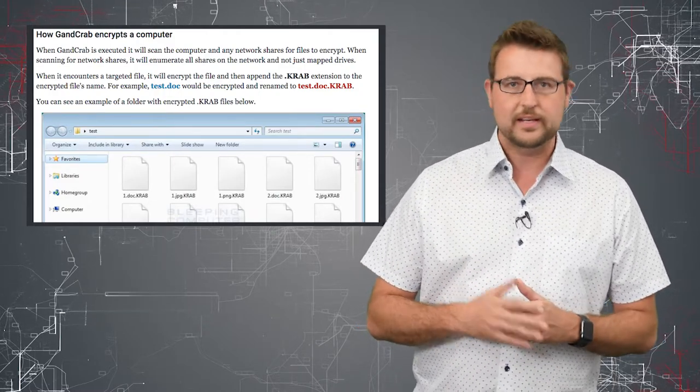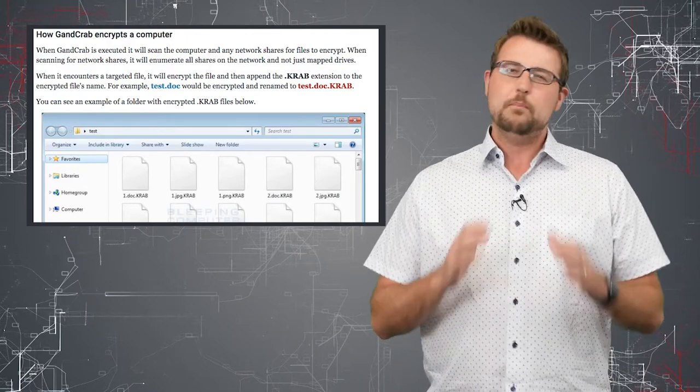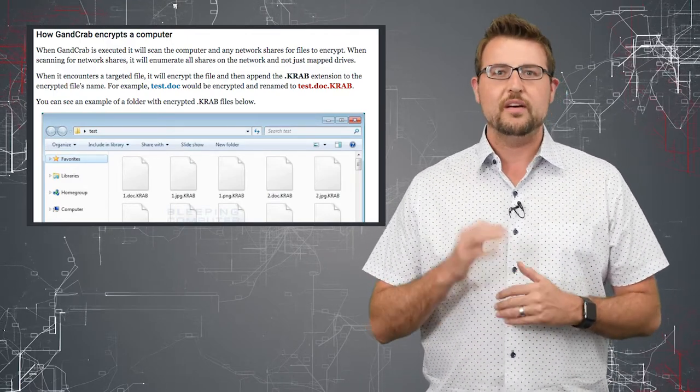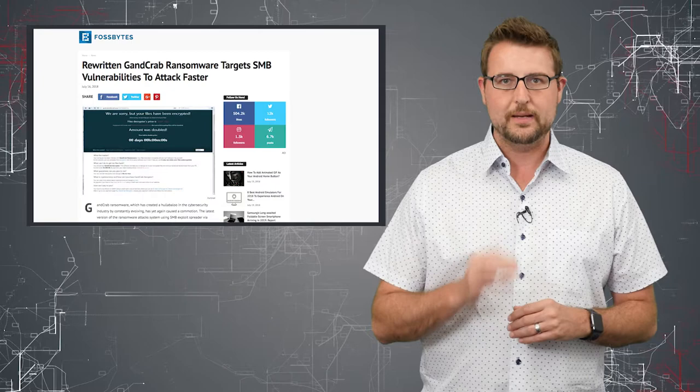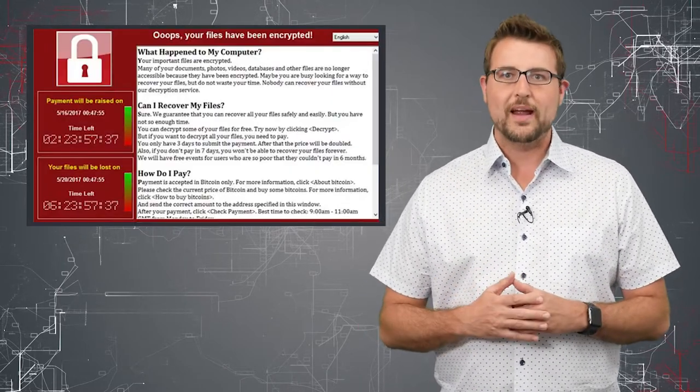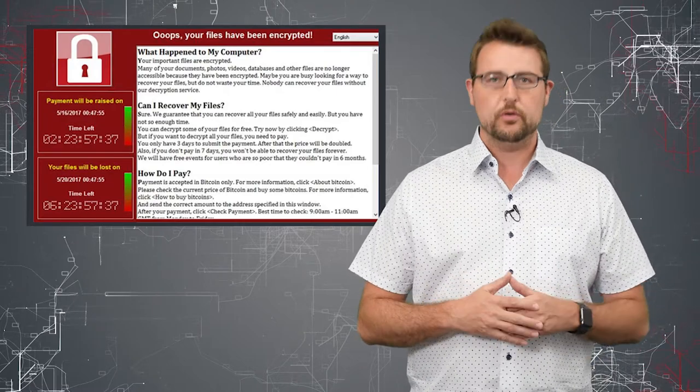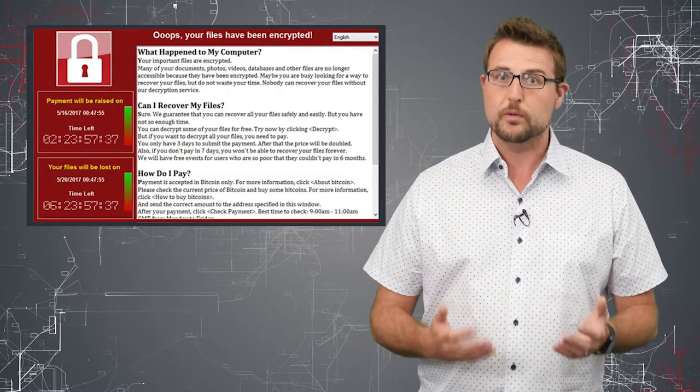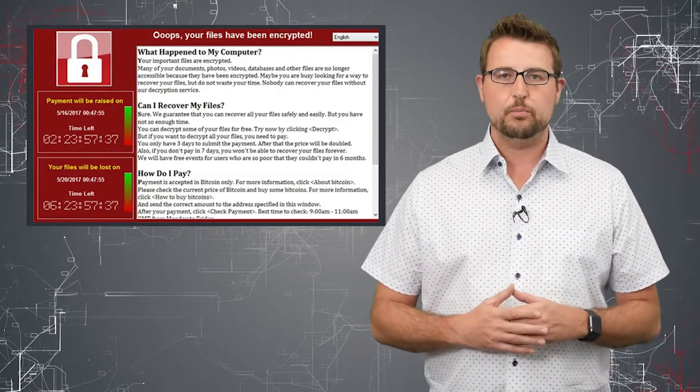They used to be Crab with a C, now it's Crab with a K, but there's also some rumors of alleged SMB spreading mechanisms. You probably remember WannaCry, the first big ransom worm that used an SMB or Server Message Block vulnerability to automatically spread in your network.